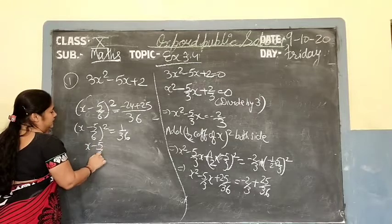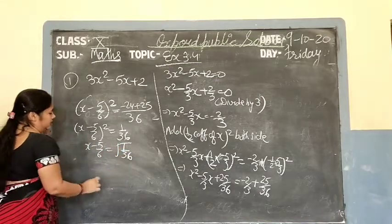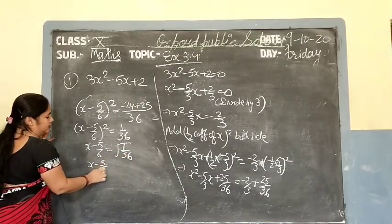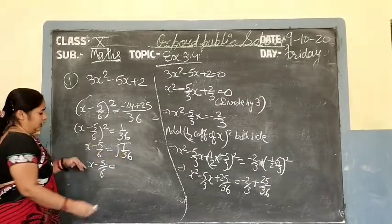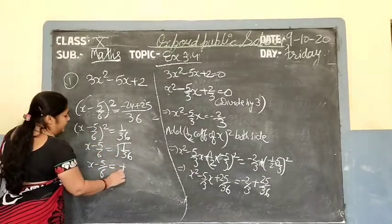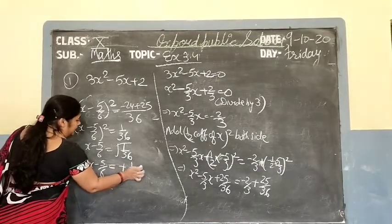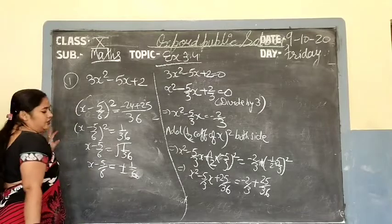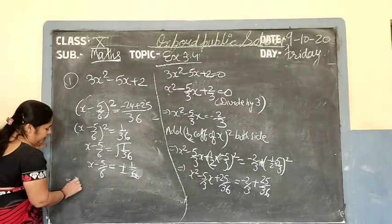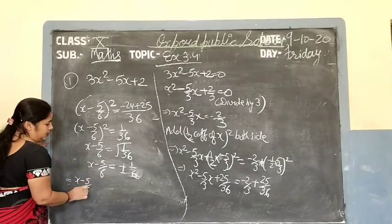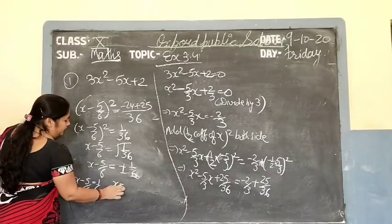Take square root of both sides: x minus 5 upon 6 equals square root of 1 upon 36. Remove the square root and we get plus minus 1 upon 6 on the right side, since square root of 36 is 6. So x minus 5 upon 6 equals plus minus 1 upon 6.